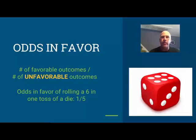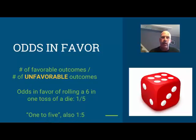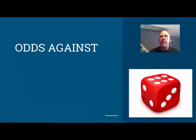There are a couple of ways you can express this result. You can call it one to five using the word 'to', or you can use colon notation. So you have choices — you could write it as a fraction, write it using the word 'to', or write it using colon notation. Now, odds against are very similar, but instead of favorable over unfavorable, we take the reciprocal.